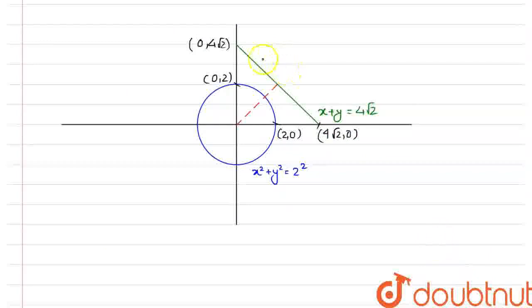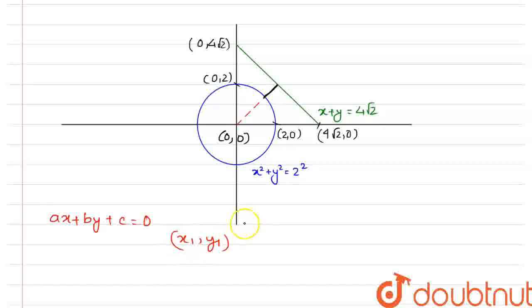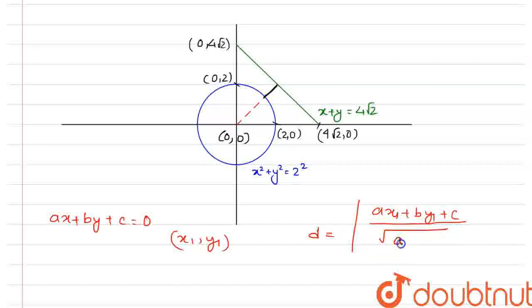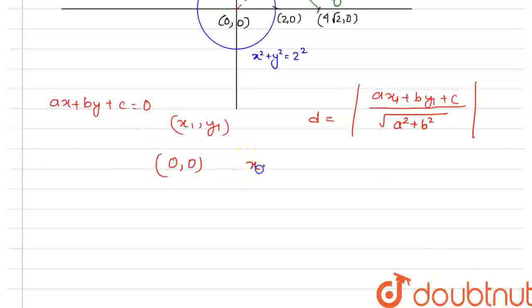To find the minimum distance between a line and a circle, we find the perpendicular distance from the center of the circle to the straight line, then subtract the radius. The perpendicular distance from a point (x1, y1) to a line ax + by + c = 0 is |ax1 + by1 + c| divided by √(a² + b²). Here we need the distance from the origin (0, 0) to the line x + y = 4√2.